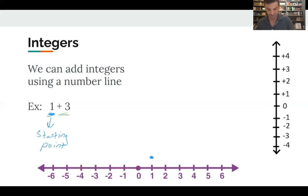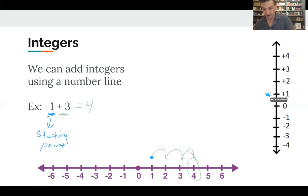I move one, two, three, and that means our answer is four. You can do this on the horizontal number line or on the vertical number line — I can put a one here and then move up one, two, three units, and my answer is still positive four.